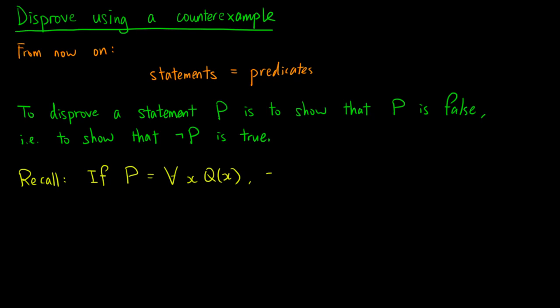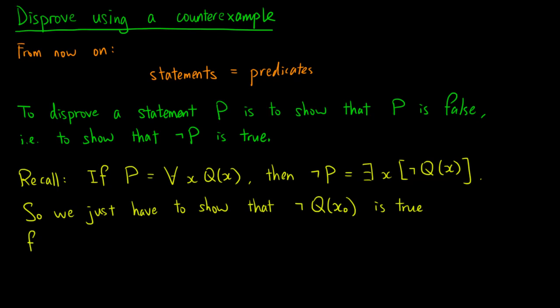Consider the case where P is of the form for all x Q(x). Then we know that not P is there exists x not Q(x). So, to disprove P, we just have to show that not Q is true for some x0. This x0 is called a counter-example to P.